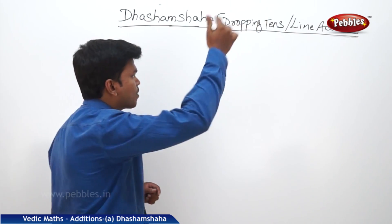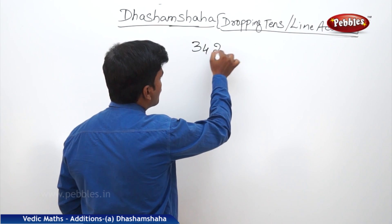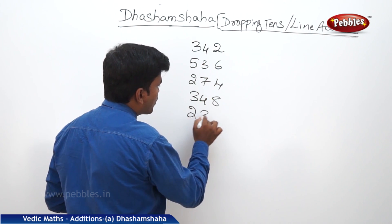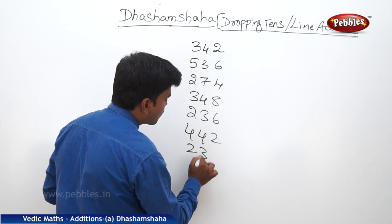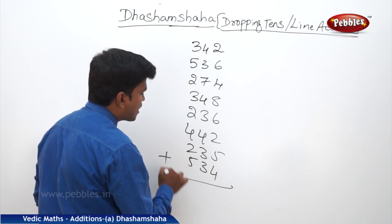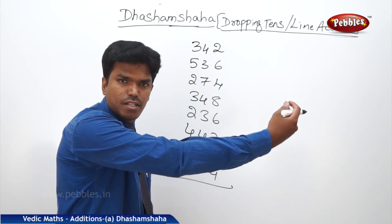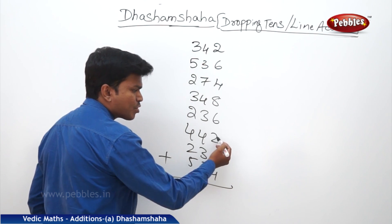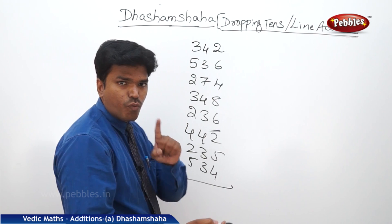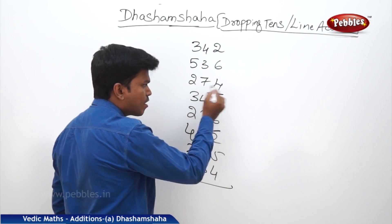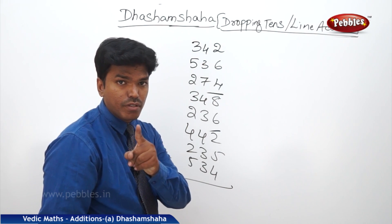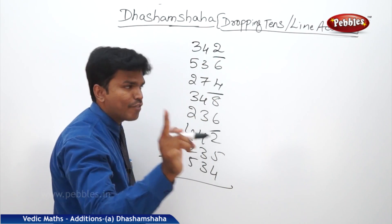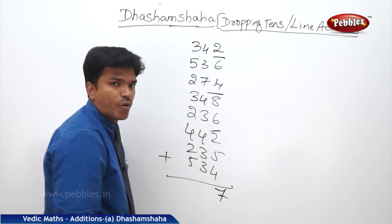Ready? Let us continue. Suppose: 342, 536, 274, 348, 236, 442, 235, 534. Now let us add these numbers. Same way, start from the right side — the rightmost column. 4 plus 5? 9. 9 plus 2? 11 — more than 10, remaining 1. 1 plus 6? 7. 7, 8 → 5 (drop 10). 5, 4 → 9. 9, 6 → 5 (drop 10). 5, 4 → 9. Continuing: remaining 7. How many 10s? Count at a time — 3. Carry 3 to the next line.